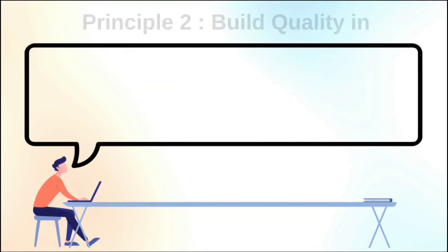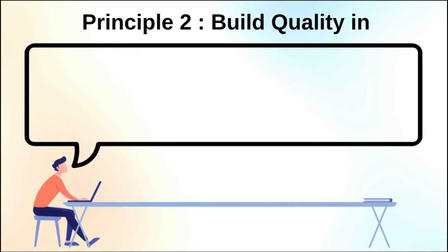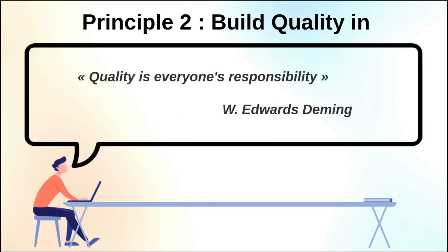The second principle is building quality in. This is tied to the Deming quote: quality is everyone's responsibility. This principle is about making sure that you have quality built into the product and into the process.